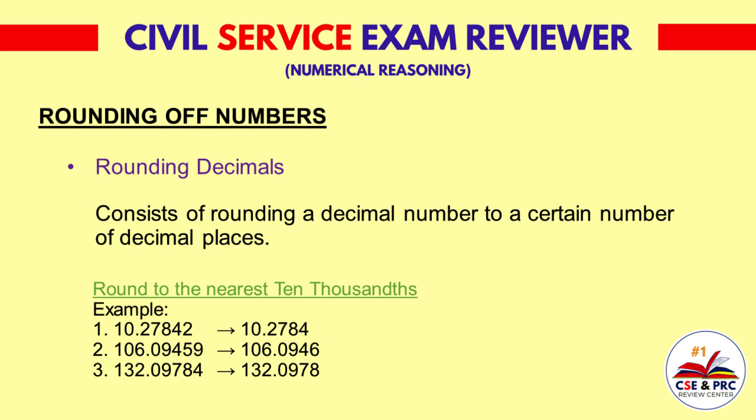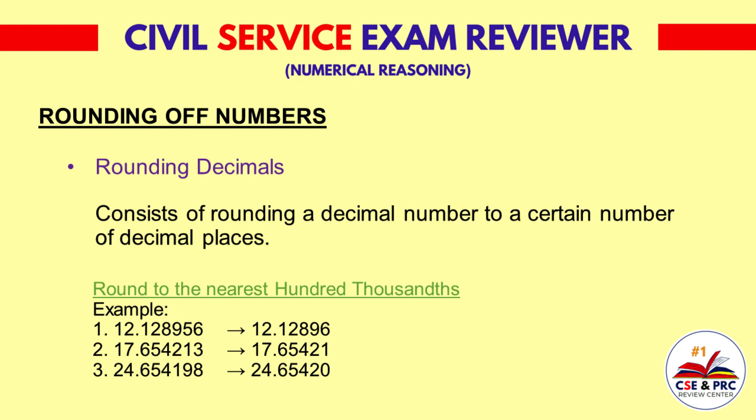Round to the nearest hundred-thousandths. Example 1: 12.128956 — the result will be 12.12896. Example 2: 17.654213 — the result will be 17.65421. Example 3: 24.654198 — the result will be 24.65420.